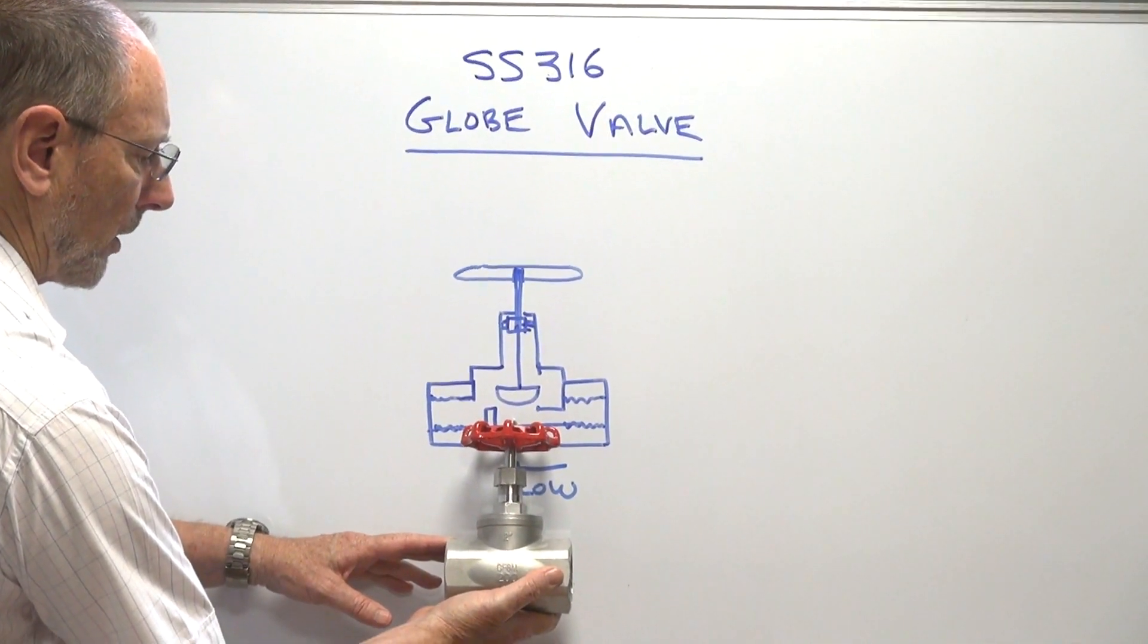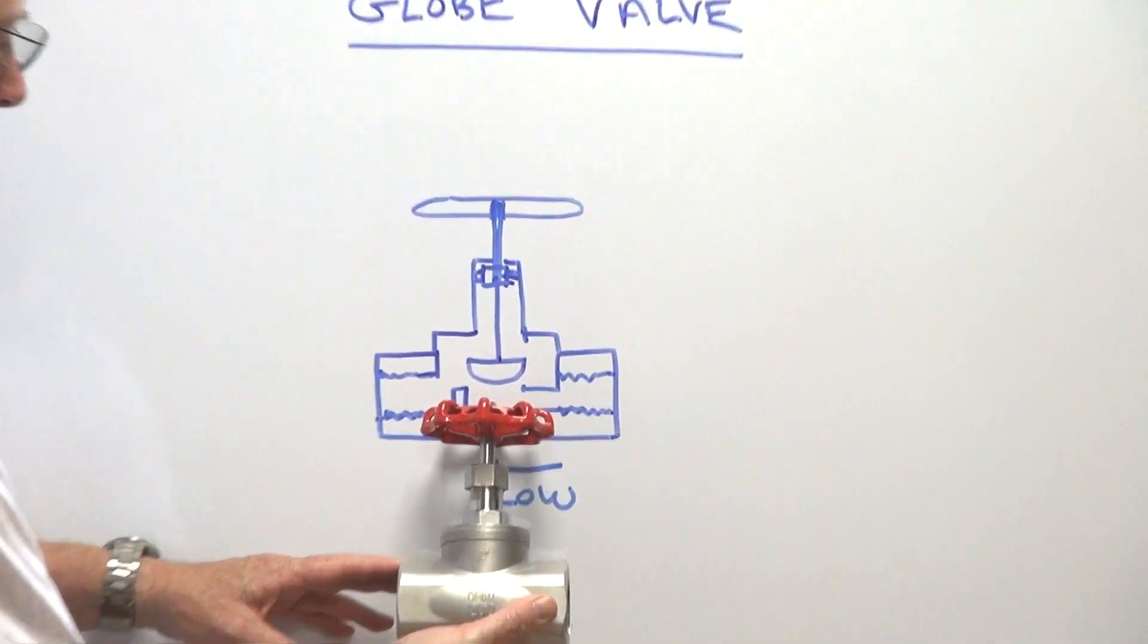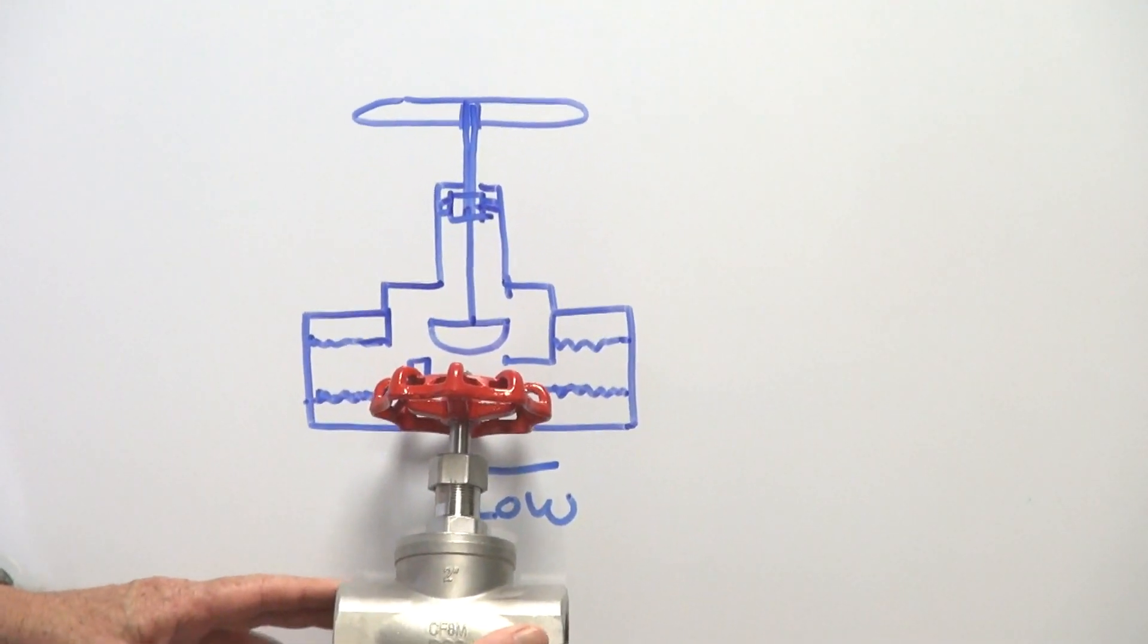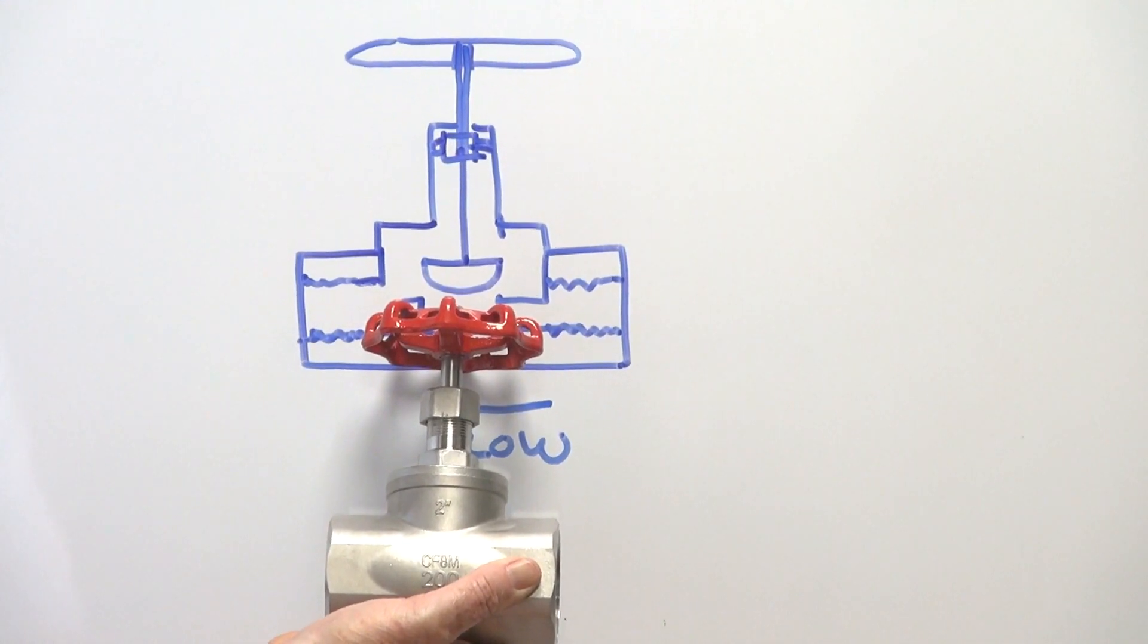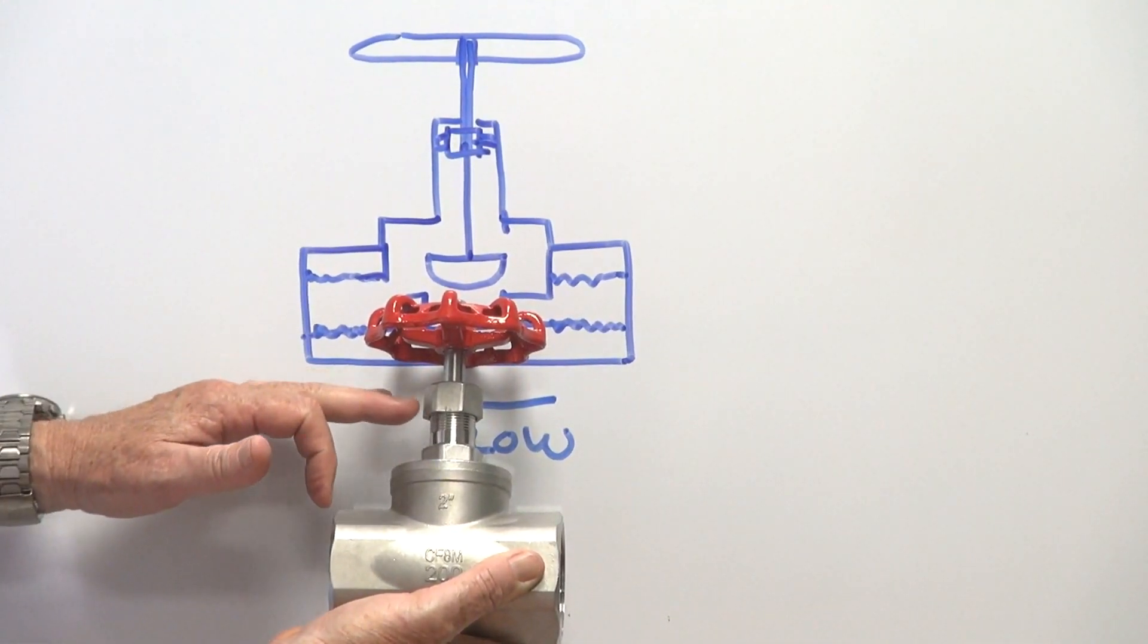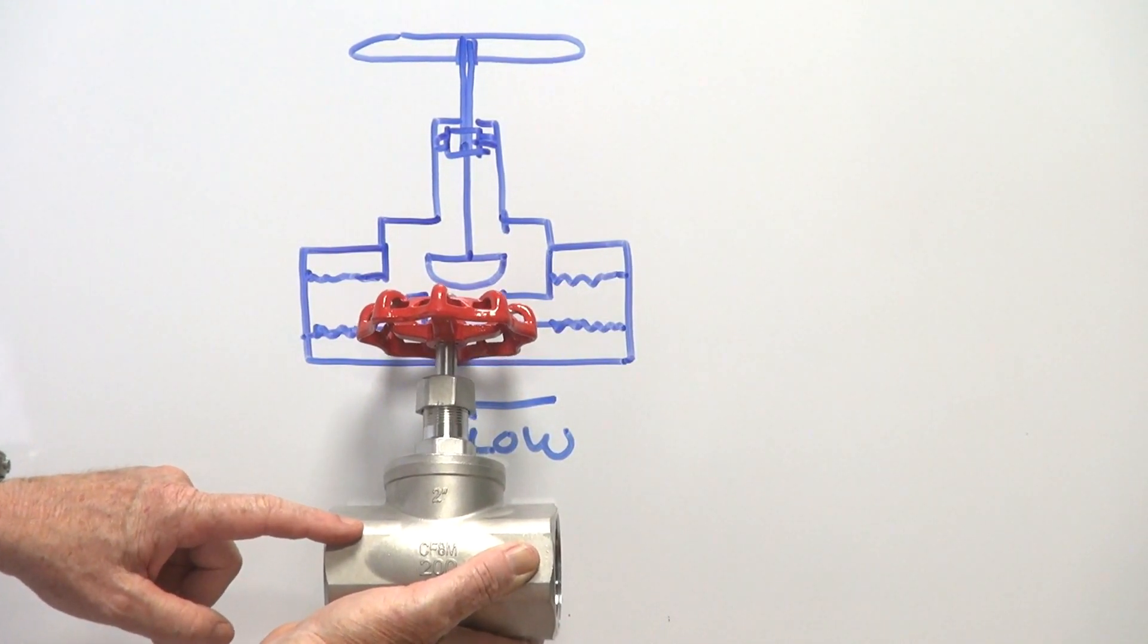Stainless steel 316 globe valve from a variety of sizes up to 2 inch. Cast 316 body, PTFE seat in the gland, and the actual globe itself and the body are metal to metal face.